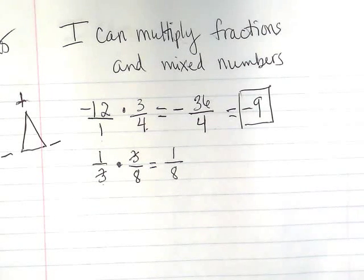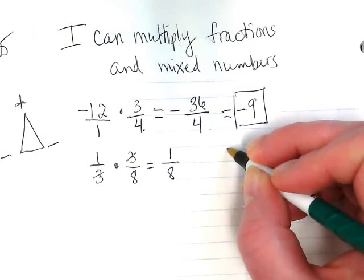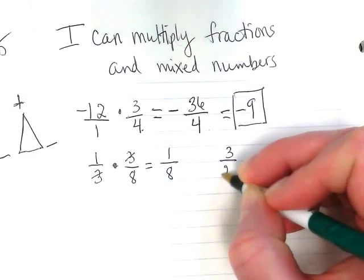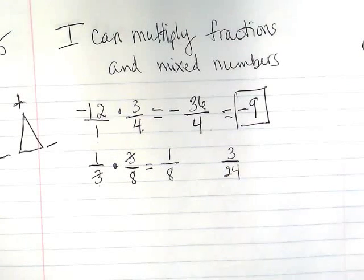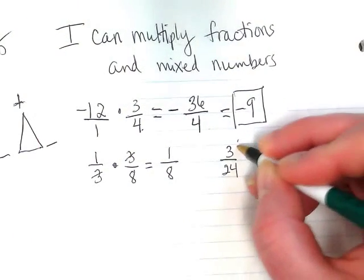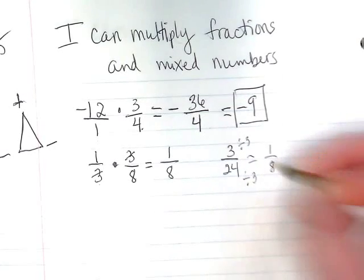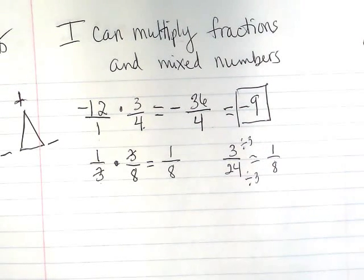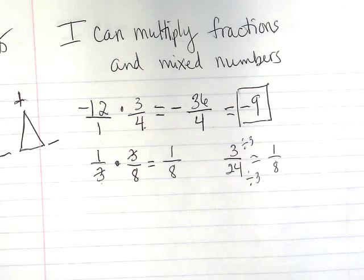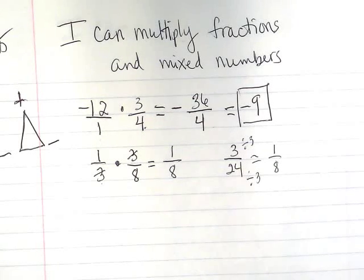Really what I did by doing that is I simplified first. If I hadn't done that, I would have ended up with 3 over 24. 3 over 24 can be simplified by dividing 3 from both, and I end up with 1 over 8. So I really just simplified it before I multiplied instead of simplifying it after. Two different ways of getting to the same place, and you can choose whichever way you like.